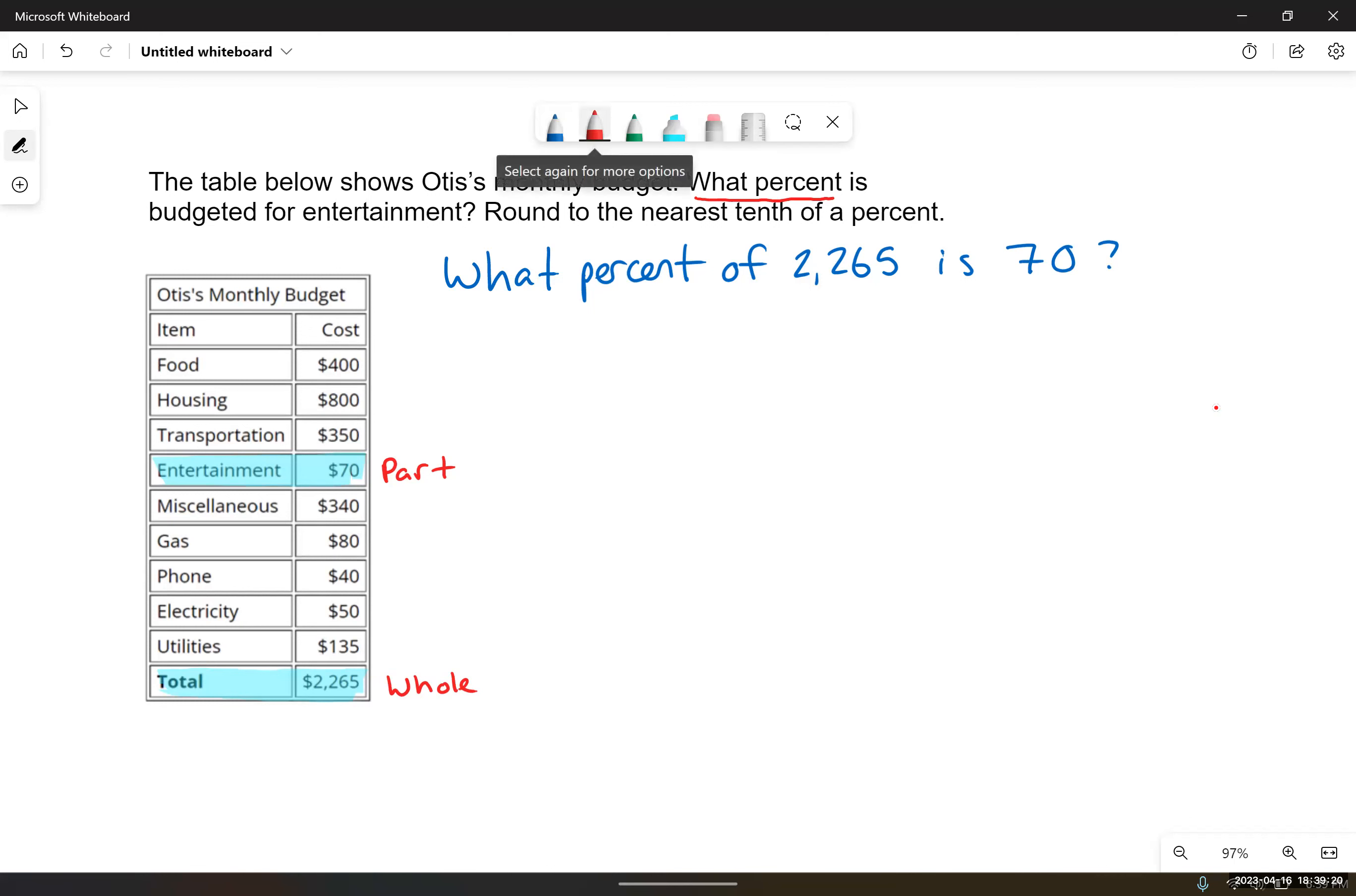All right, we need to set up an algebraic equation, a mathematical equation. If we have an equation, we need an equal sign, and our equal sign is right there. It's the word is, so everything before the word is, is the left-hand side. Everything after the word is, is the right-hand side. And the unknown here is this percentage. What percent of $2,265 is 70? So for that unknown, I'm going to use X.